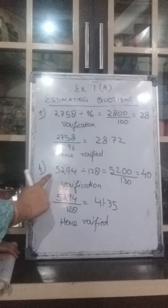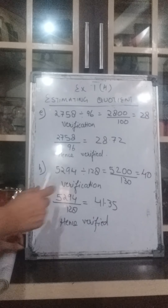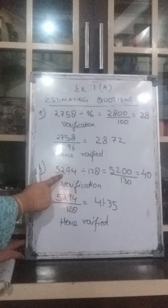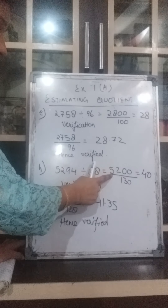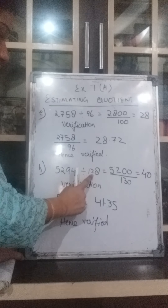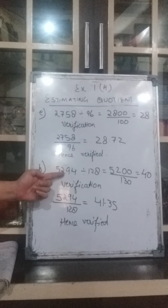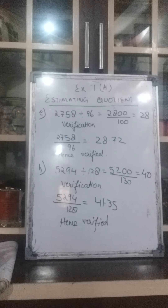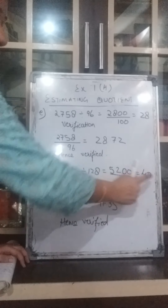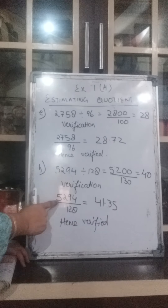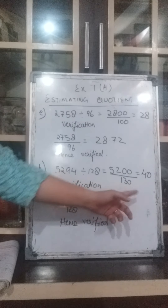H part: 5294 divided by 128. We take this number as 5200. You may ask why not 5300, since 5300 is much closer. We are not taking 5300 because we are changing the divisor 128 to 130, and 5200 is divisible by 130 — whereas 5200 would not be divisible by 120. Both numbers must be closer to the originals and also divisible by each other. So 5200 divided by 130 gives 40. Verification: 5294 divided by 128 gives 41.35, which is approximately 40. Hence verified.